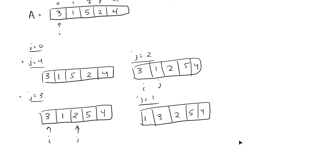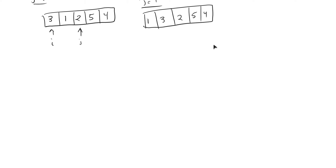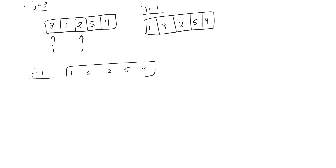Now we move to I equals one. When I is equal to one, this is what the array looks like — carrying it down: one, three, two, five, four. I is positioned here, and we start with J all the way at the end and do the exact same thing.